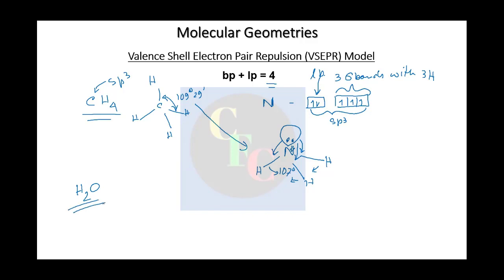The effect is even more pronounced in the case of water, where there are two lone pairs. Now there are two lone pairs, so they repel each other very much, forcing the oxygen-hydrogen bonds away from them. These two bonds come closer to each other, reducing the angle to 104.5 degrees.